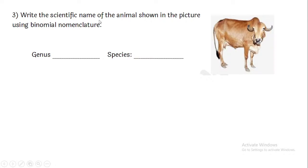Binomial nomenclature was given by Carlos Linnaeus. The genus of cow or ox is Bos and the species is Taurus.